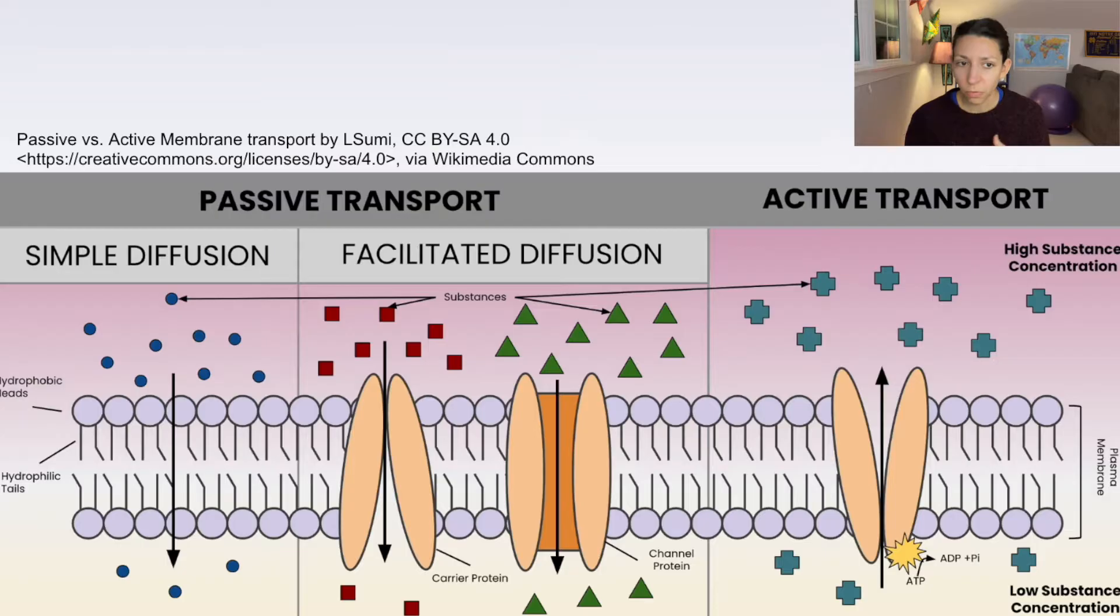Finally, we get to active transport, which does involve ATP or energy. And this is when we are moving from a low concentration to a high concentration. So we're going against the concentration gradient, and molecules are being sent in a way that requires extra energy. And we're going to use a transport protein to have this happen.